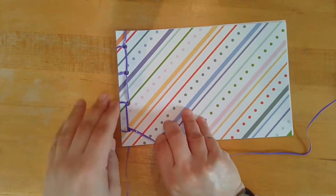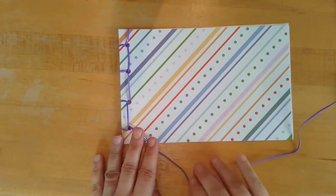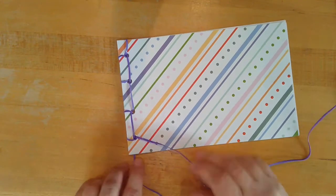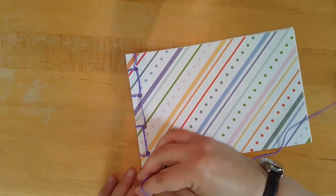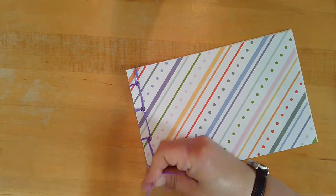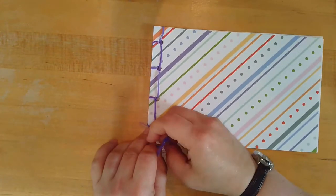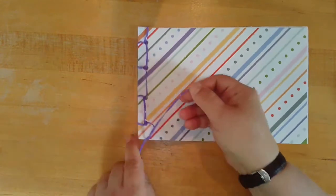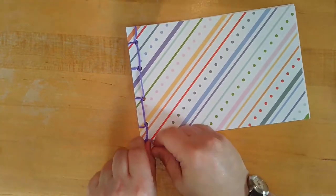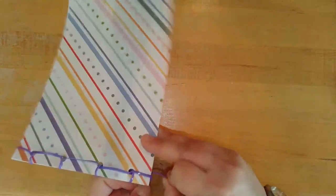If you're not going to add beads, all you need to do is knot your two strings down at the bottom. Because the jelly string likes to come loose, I would recommend doing at least two granny knots or square knots to keep things in place.